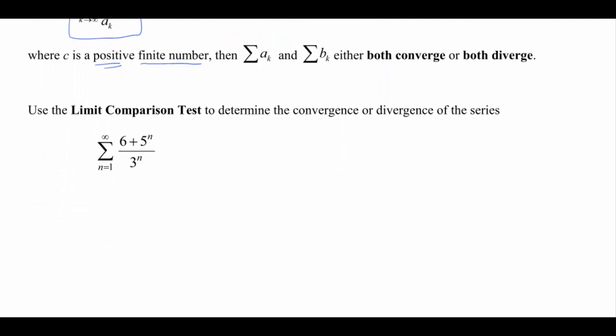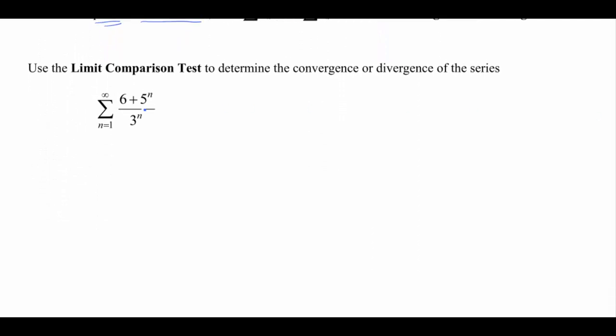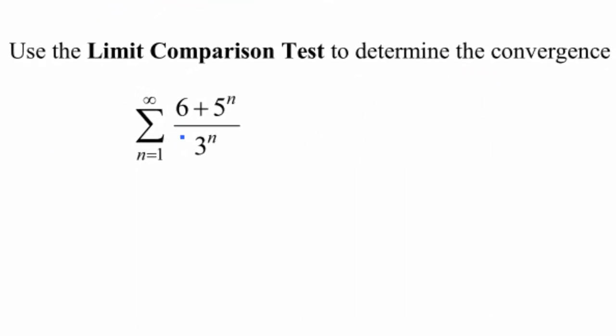All right, so let's take a look at our example here then. This one says use the limit comparison test to determine the convergence or divergence of the series. And here we've got the series of 6 plus 5 to the n over 3 to the n as n goes from 1 to infinity.